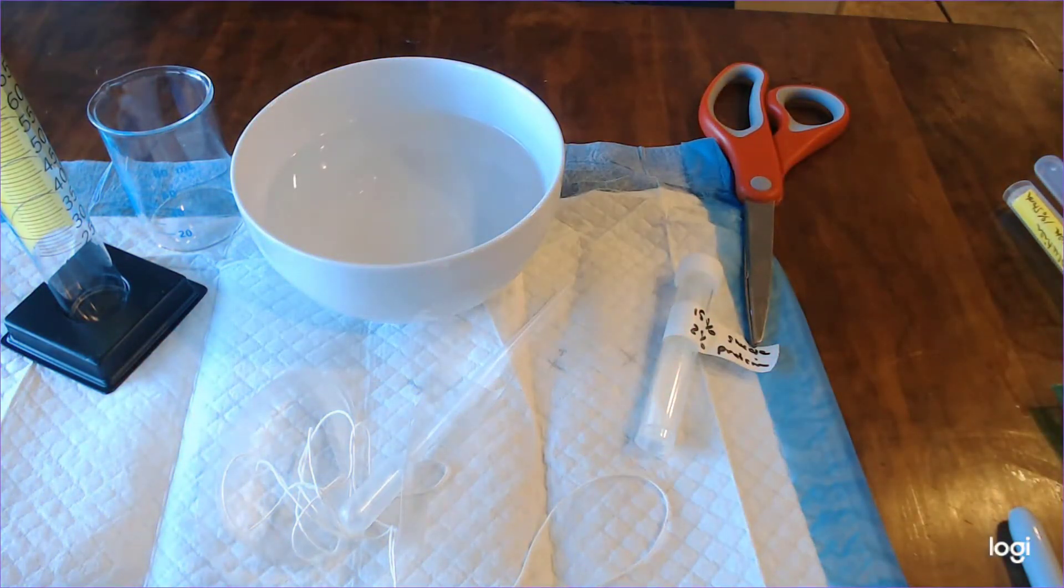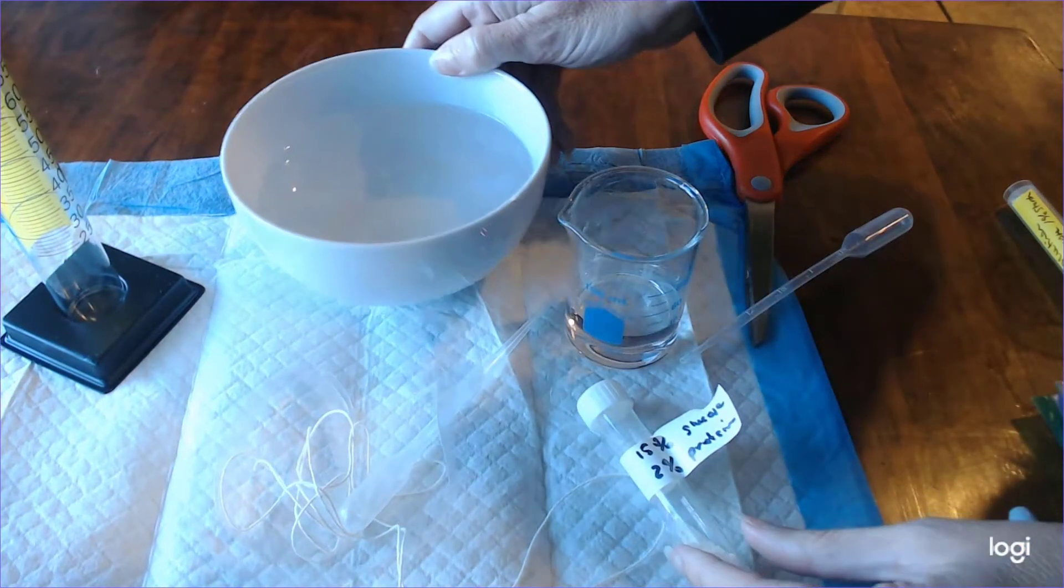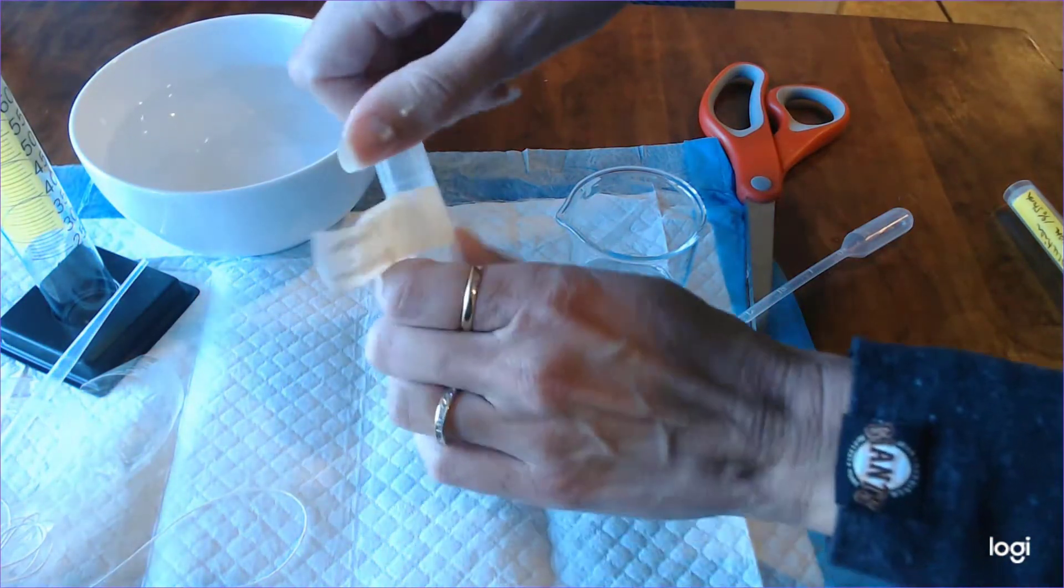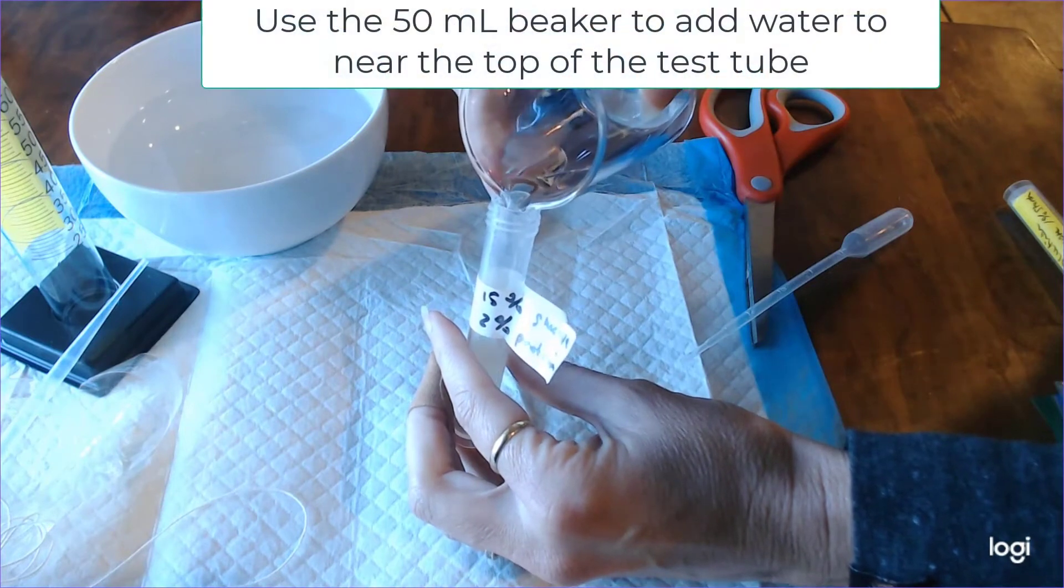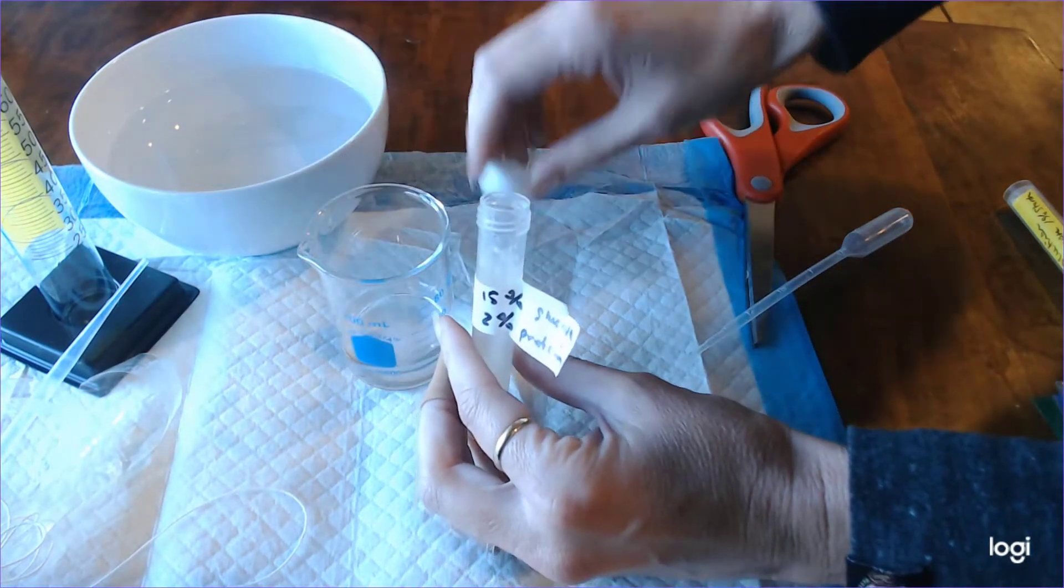While the dialysis tubing is soaking let's work on dissolving the dialysis powder in 10 milliliters of solution. It's a 10 milliliter test tube so we're just going to go ahead and add water to close to the top of the test tube.